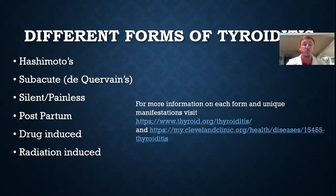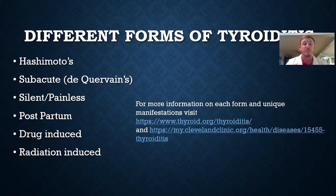Different forms of thyroiditis are Hashimoto's, subacute or de Quervain's, silent or painless, postpartum, drug-induced, and radiation-induced thyroiditis. The provided links add more information about these different subcategories.